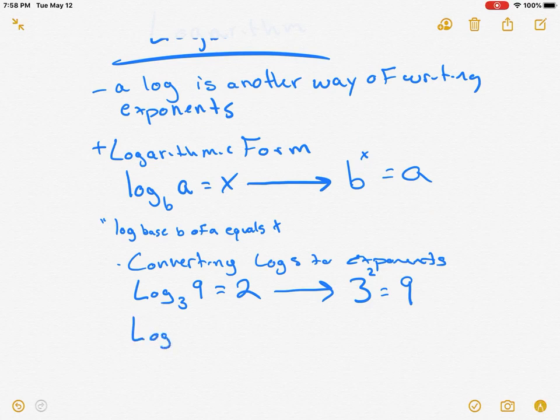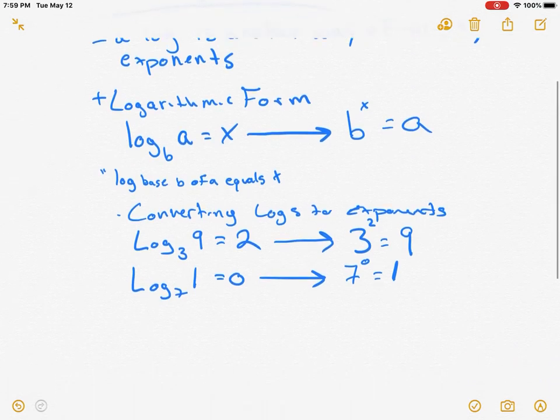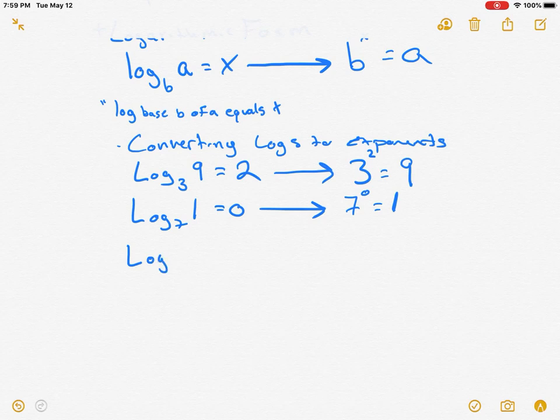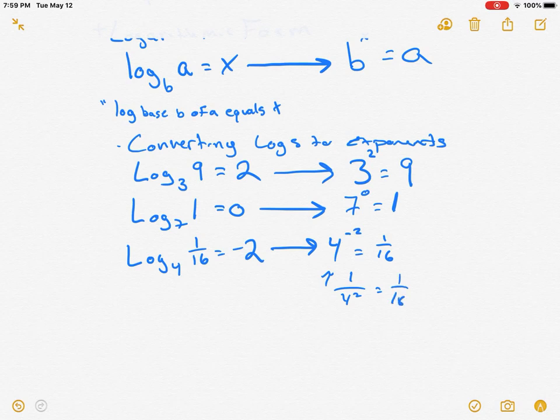Log base 7 of 1 equals 0. We go ahead and we take what the base is. We set it equal. We raise it to what it's equal. And that equals a, which is 1. Any number to the 0 exponent to the 0 power is, in fact, 1. So, let's look at log base 4 of 1/16 equals negative 2. Okay? So, once again, we take the base. We raise it to the x. So, remember, that's like saying, boom, boom, boom. Right? Fairly simple.